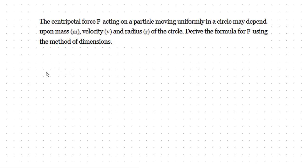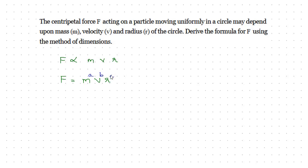There is an object moving along a circle — this is circular motion. The centripetal force F is proportional to mass M, velocity V, and radius R. So F equals M raised to a, V raised to b, R raised to c, where a, b, c are the unknown powers we need to find.